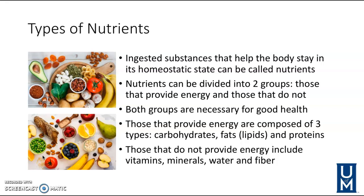Nutrients can be divided into two groups: those that provide energy and those that don't. Of the seven nutrient types, three provide energy — carbohydrates, fats, and proteins. The other four do not provide energy but are still very important for body metabolism and nutrient intake: vitamins, minerals, water, and fiber.